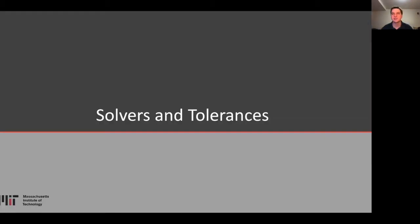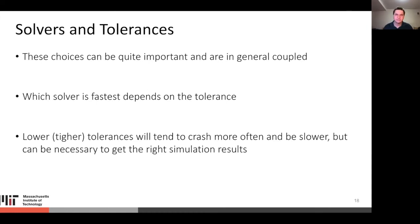Now let's talk about solvers and tolerances, which are very important for making sure your simulations give the right results. These choices can be very important and are coupled — which solver is fastest often depends on what tolerance you're simulating to. Tighter tolerances will tend to crash more often and be slower, but there are situations where they are necessary to get the simulation results right.